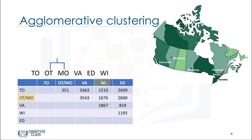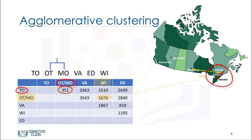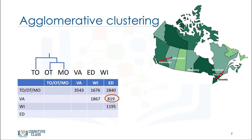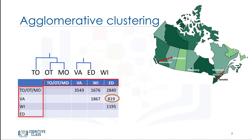Then the distances from all cities to this new merged cluster get updated. For example, how do we calculate the distance from Winnipeg to the Ottawa-Montreal cluster? There are different approaches, but for example we could select the distance from the center of the Ottawa-Montreal cluster to Winnipeg. Updating the distance matrix, we now have one less cluster. Next, we look for the closest clusters once again. In this case, Ottawa-Montreal and Toronto are the closest ones, which creates another cluster. In the next step, the closest distance is between the Vancouver cluster and the Edmonton cluster, forming a new cluster and their data in the matrix table gets updated. Essentially, the rows and columns are merged as the clusters are merged and the distance updated. This is a common way to implement this type of clustering and has the benefit of caching distances between clusters.